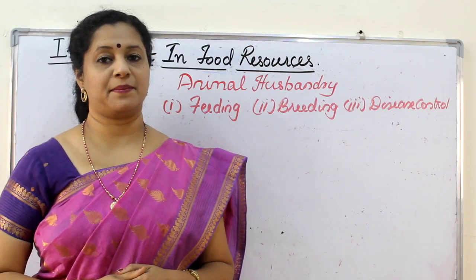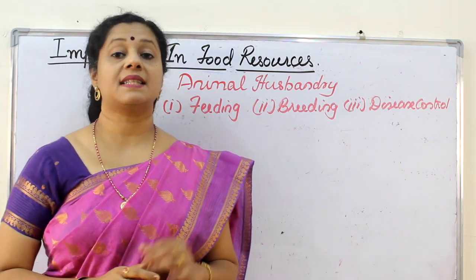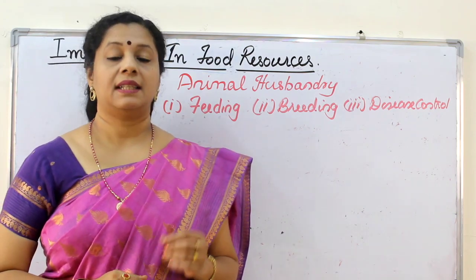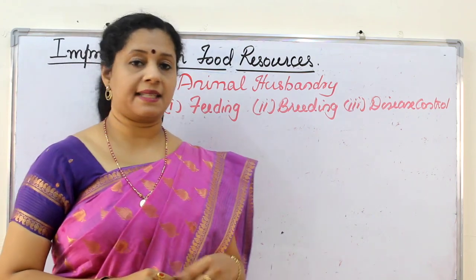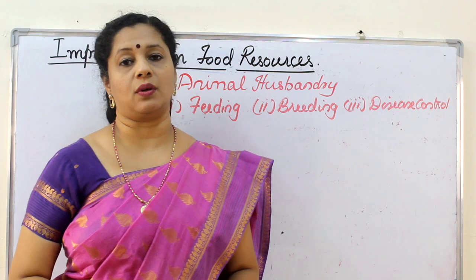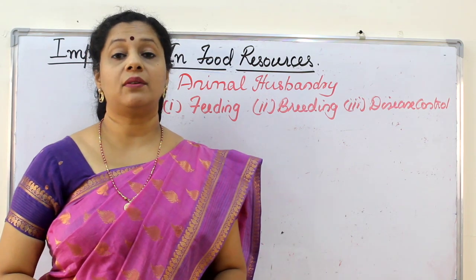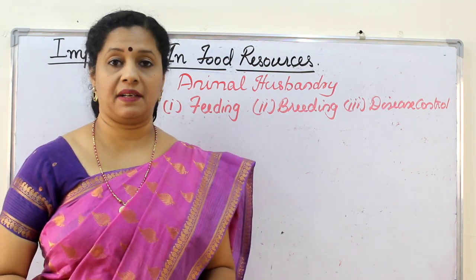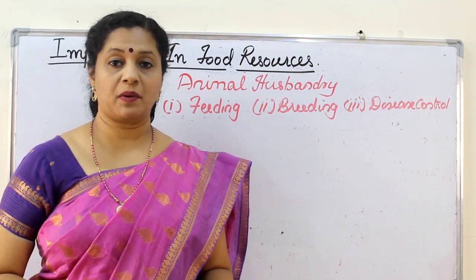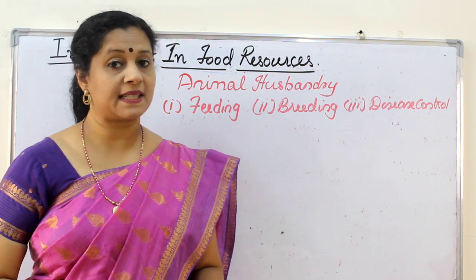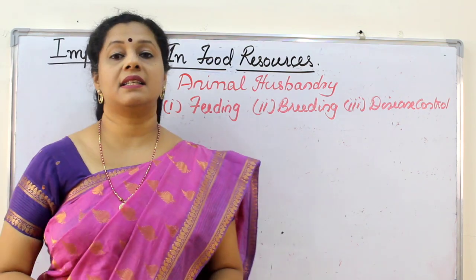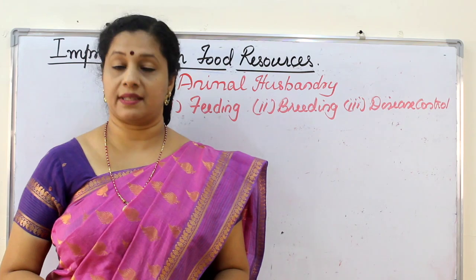What is animal husbandry? Animal husbandry is a scientific management of livestock that includes three aspects: feeding, breeding, and disease control. Their feeding should be done in a proper way, their breeding should be done scientifically to improve new varieties, and disease control is also necessary.